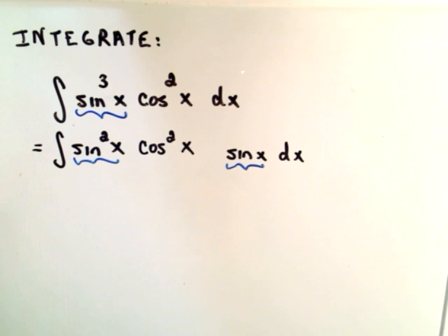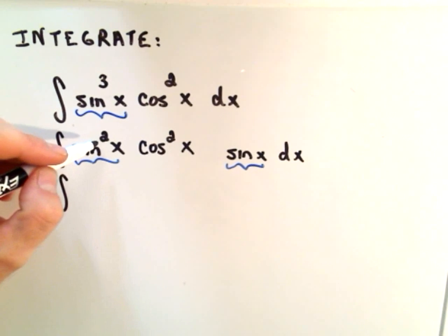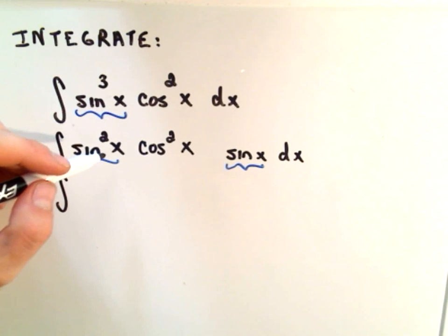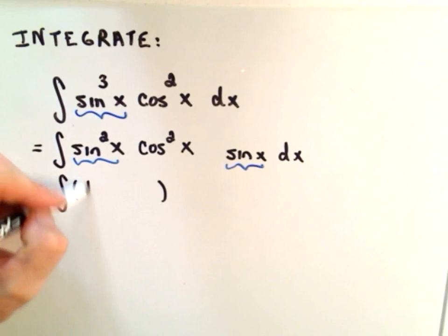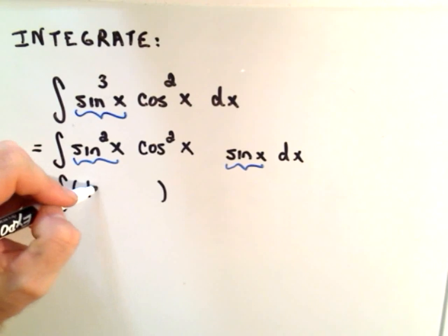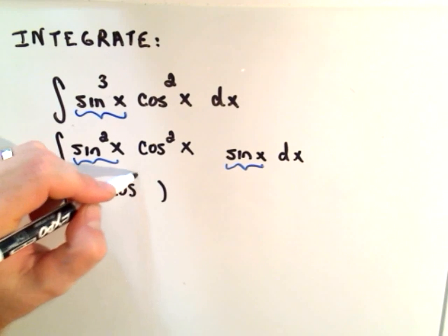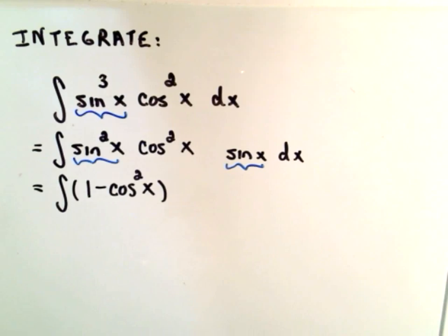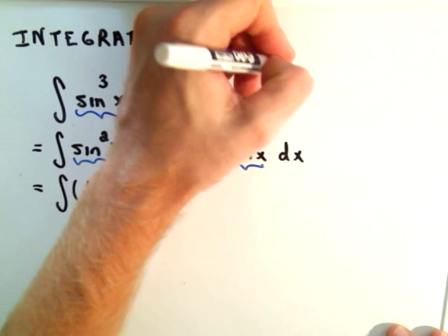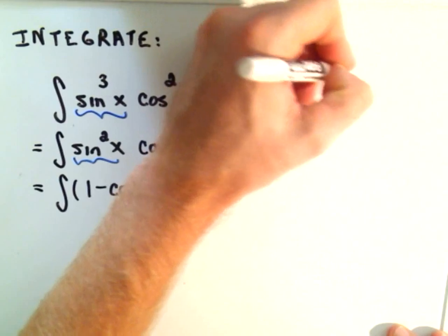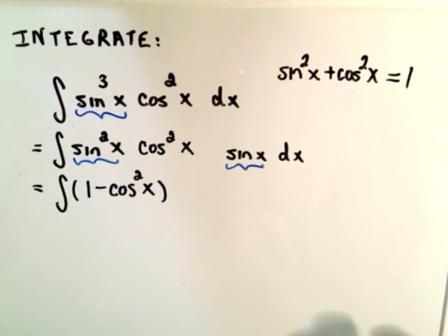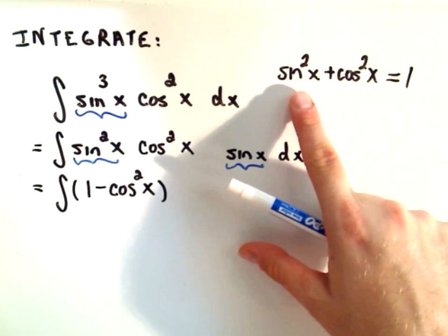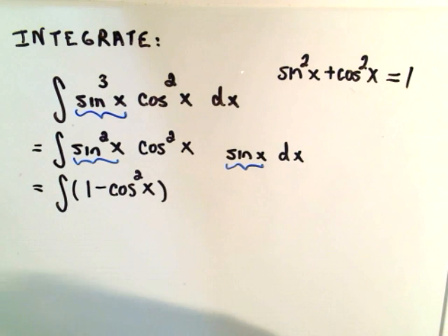Now the idea is you use your trig identity, sine squared plus cosine squared equals one, and we're going to use that to replace the sine squared term. So we would get that sine squared is equivalent to one minus cosine squared of x. Just using our trig identity, if we solve that for sine squared, we'll get one minus cosine squared.